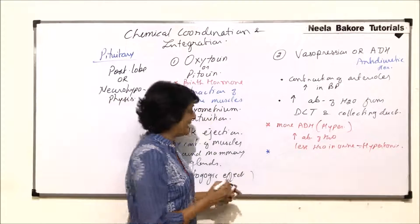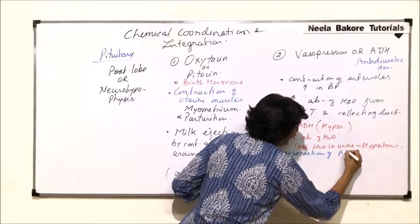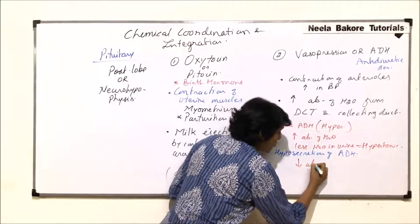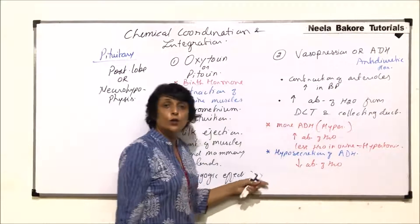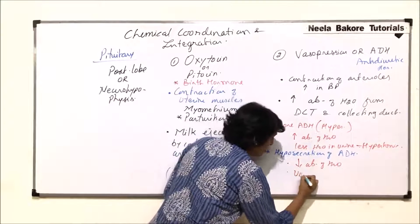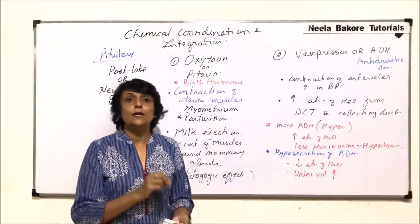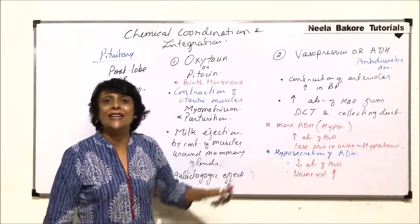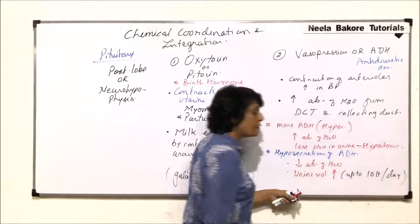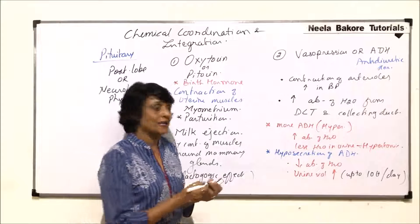The other situation is when there is less ADH - hyposecretion of ADH. If ADH secretion is less, then there would be less absorption of water. In other words, if water is not absorbed, all that extra water will be eliminated in urine. So urine volume is going to increase from normal about 2 liters per day. The urine volume can go up to 10 liters per day. This is what we mean by increase in volume, and this condition is known as diabetes insipidus.